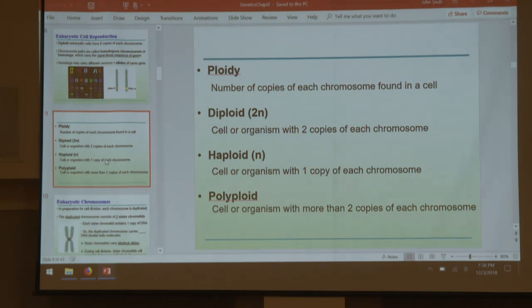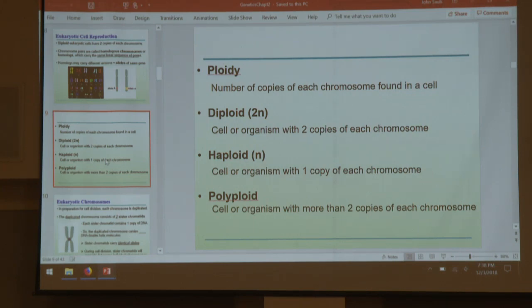If diploid is two, we can describe other forms of ploidy. A haploid cell has only one copy. A polyploid has more than two — we didn't really talk about that, so don't worry about it. But that is what we discuss when we mean ploidy.